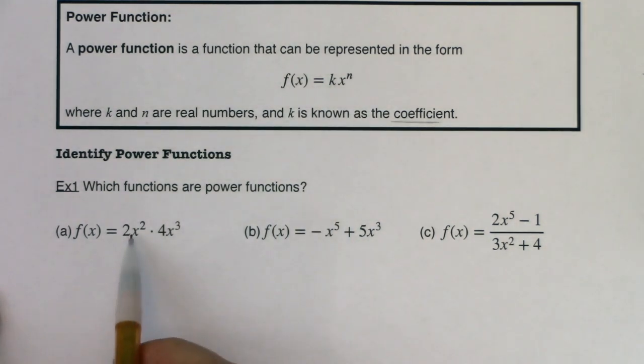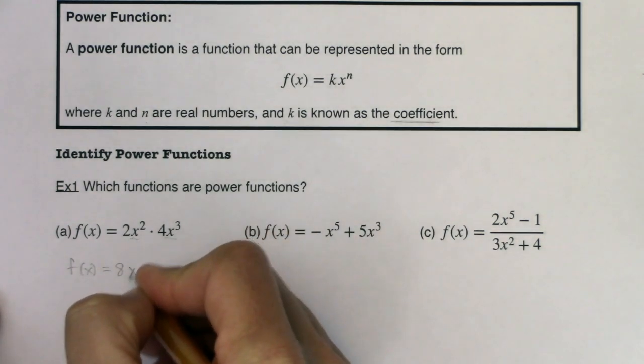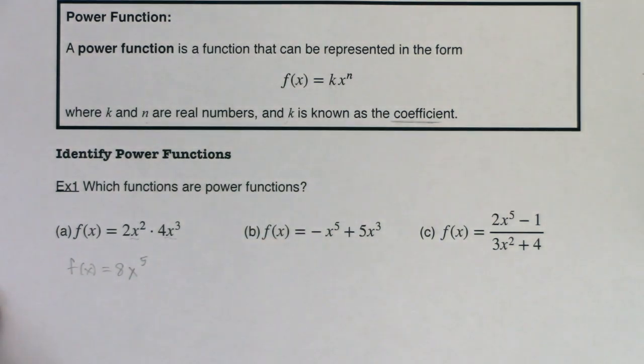Well, let's take a look at this. I've got two powers multiplied together. If I simplify this a little bit, 2 times 4 is 8. And with x squared times x cubed, if you remember, the base is the same, so we're going to add the exponents. This is 8x to the fifth.